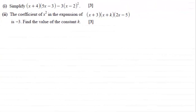Hi there. Now for this question, the first part, we're asked to simplify x plus 4 multiplied with 5x minus 3, then minus 3 times all of x minus 2 squared, for 3 marks.